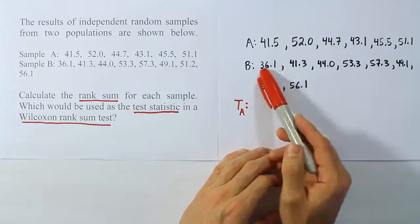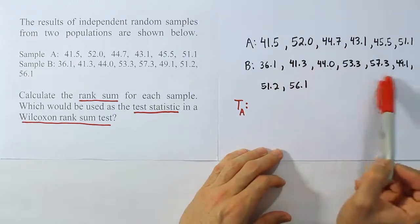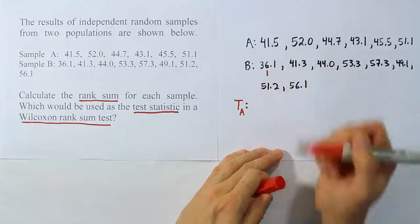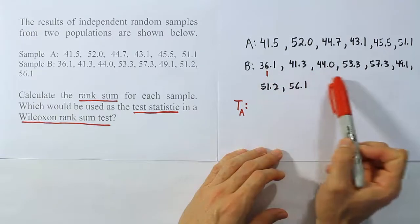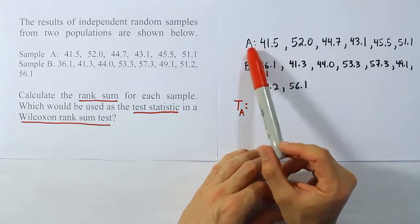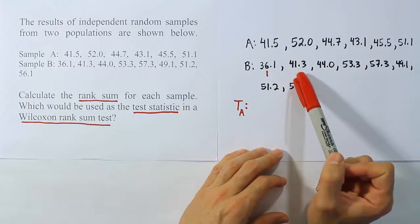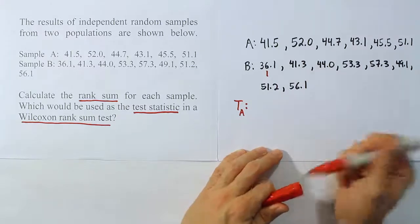I think 36 is a pretty low number. Is there any value here or here below that? I don't think so. So I'm going to give 36 rank one. Now let's look at the next number in the list. Anything that's a 40 or in the 40s? I have a 41. Anything lower than 41? There's 41.3, that's a little lower. I don't think I see anything lower than 41.3. So let's go ahead and call that 2.